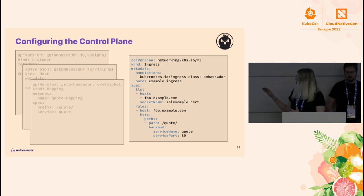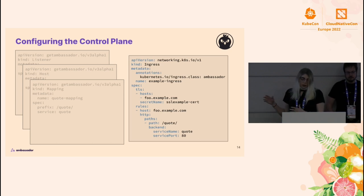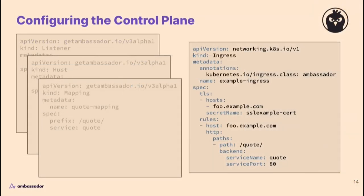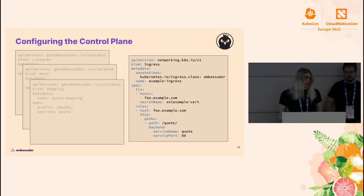Note that with the Ingress resource, you have to specify the hostname, provide your secret name if you're doing TLS termination, and specify the rules for what traffic you want to send to what upstream service. Whereas with the getambassador.io resources, you can configure things on an individual level. If you want to configure where you're listening for traffic, you can set that up once, and then focus directly on things like mappings to get config straight to your services. We've put a lot of time and effort into the design of these resources — that's why we really think this is the best way to configure it.